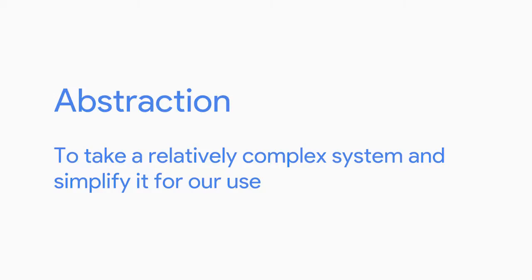When we interact with our computers we use our mouse, keyboard, or even a touch screen. We don't tell it the actual zeros and ones it needs to understand something. But wait, we actually do. We just don't ever have to worry about it. We use the concept of abstraction to take a relatively complex system and simplify it for our use.